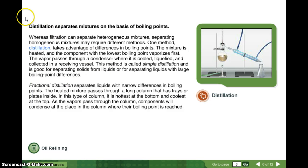Our next method is distillation. Distillation separates mixtures on the basis of boiling points. Whereas filtration can separate heterogeneous mixtures, separating homogenous mixtures may require different methods. One method, distillation, takes advantage of differences in boiling points. The mixture is heated and the components with the lowest boiling point vaporizes first or boils first. The vapor or the gas passes through a condenser, so it's a tube that's cooled off, where it is cooled, liquefied, and collected in a receiving vessel. This method is called simple distillation and is good for separating solids from liquids or for separating liquids with large boiling point differences.